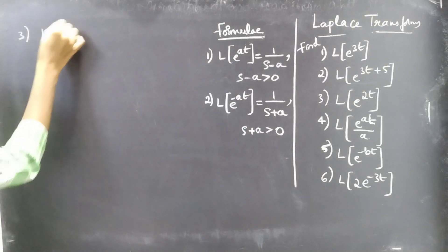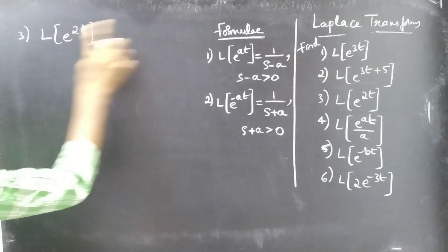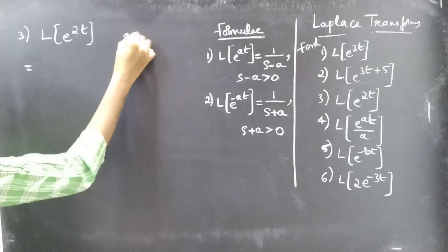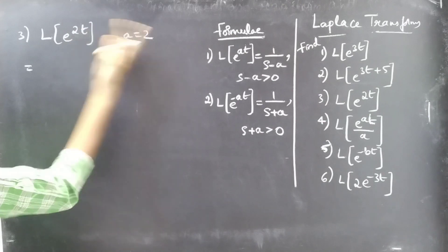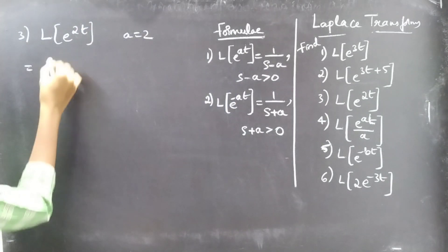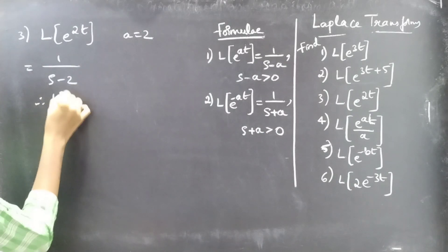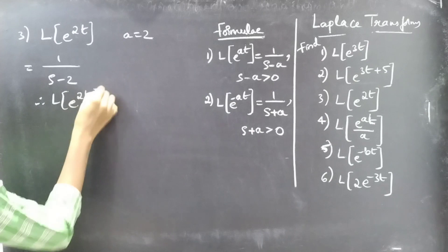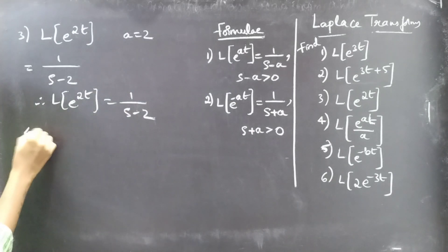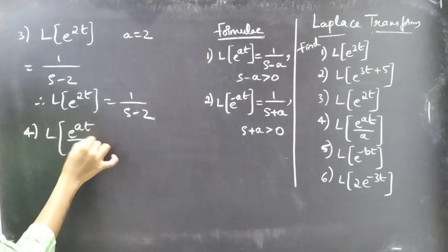Coming to the third one: L{e^(2t)}. Compare e^(2t) with e^(at), then for a = 2 we get 1/(s-2). Therefore L{e^(2t)} = 1/(s-2).